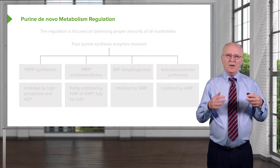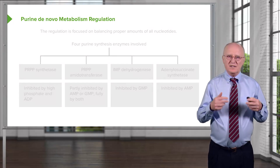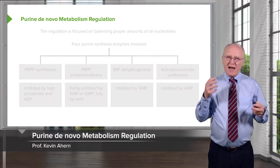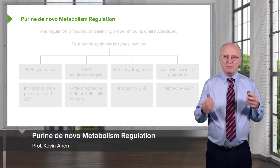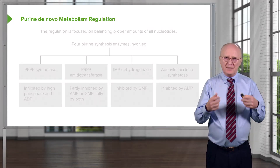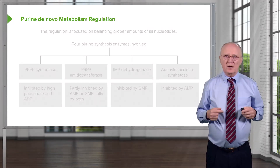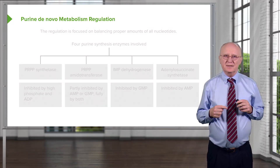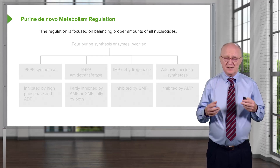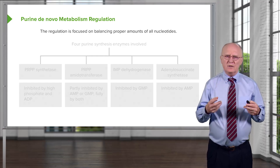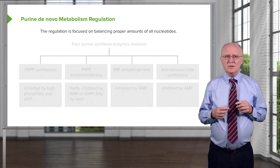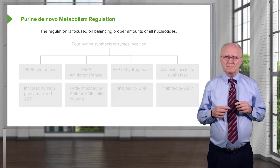You've now seen how the adenosine and guanosine nucleotides are made, but we haven't learned about how that balance that I said was so important occurs. That'll be the subject of what I'm talking about on this slide. Regulation of the synthesis of all the nucleotides is important because if it's not balanced properly, mutation will result.